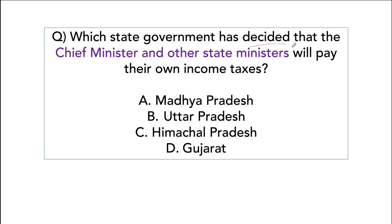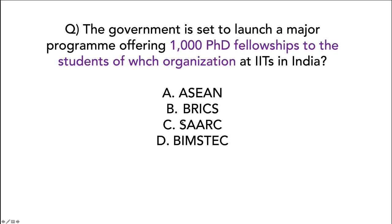Which state government has decided that the chief minister and other state ministers will pay their own income tax? So far the income tax was paid by the state exchequer. This has been decided by the government of Uttar Pradesh. The government is also offering 1000 PhD fellowships to students of ASEAN countries at IITs in India — IITs will have 1000 PhD seats reserved for ASEAN countries.